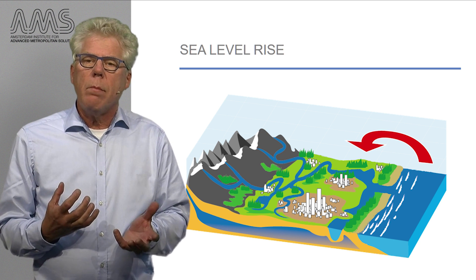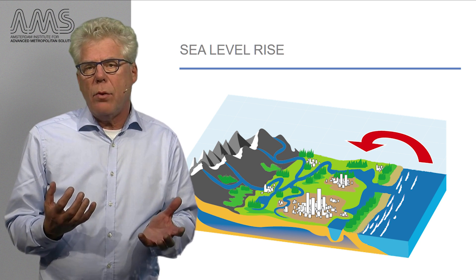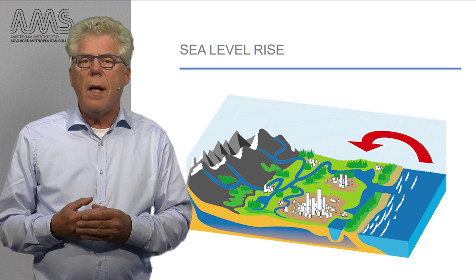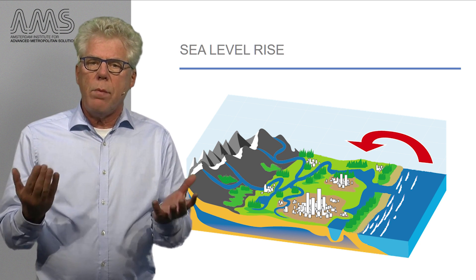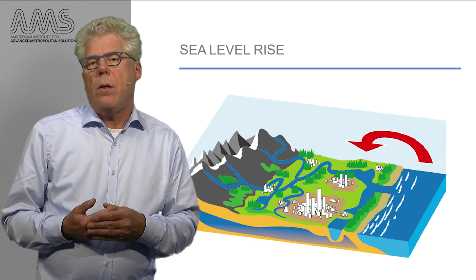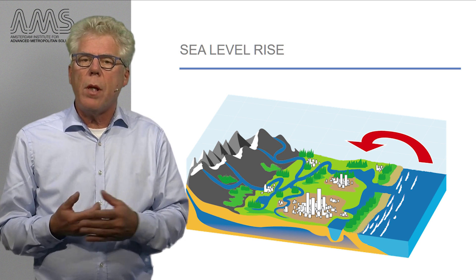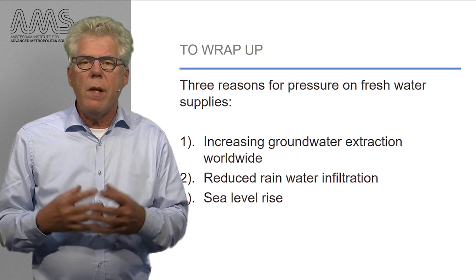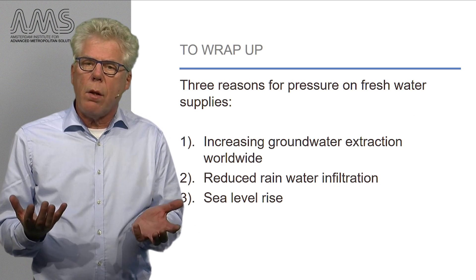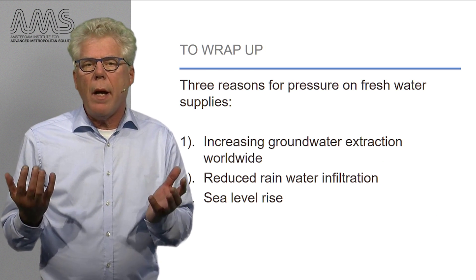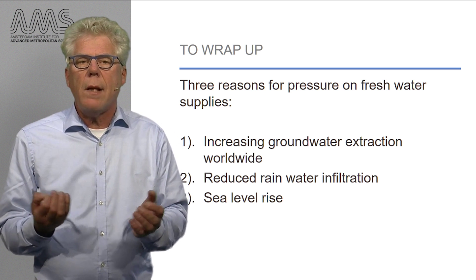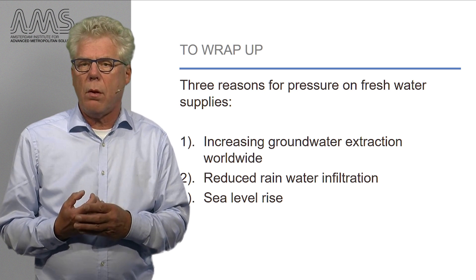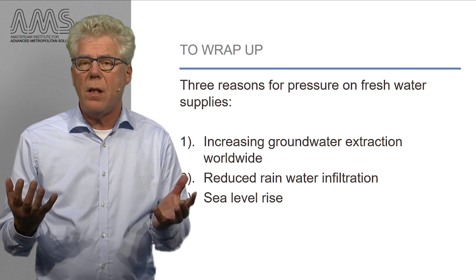At the same time, sea level is expected to rise, as I have shown you before, thereby threatening subsiding cities to be flooded, but also pushing more salt water into the rivers and groundwater. In summary, urbanized coastal areas and the surrounding agricultural lands are under threat from three factors that influence the state of fresh groundwater stocks, and this is worldwide.